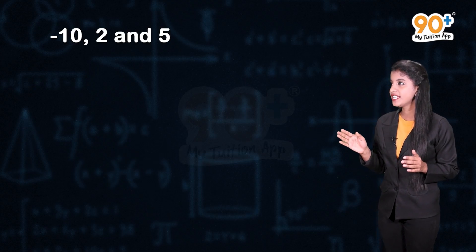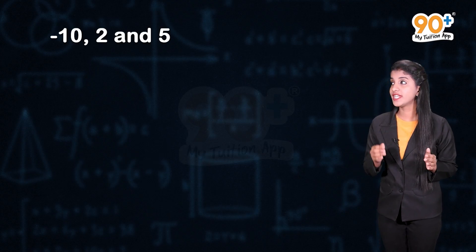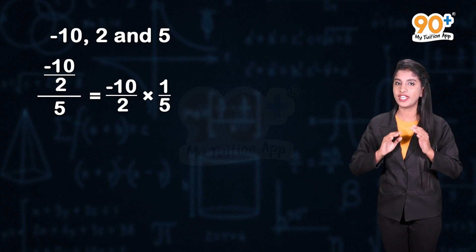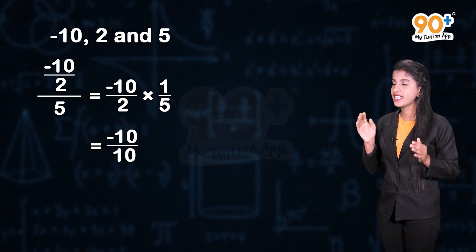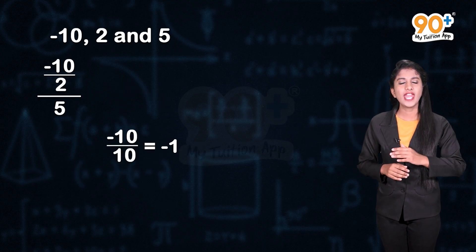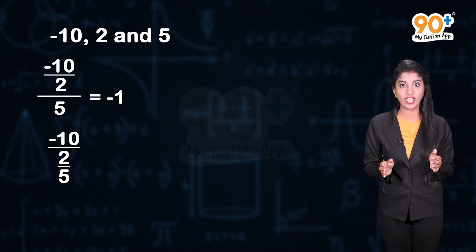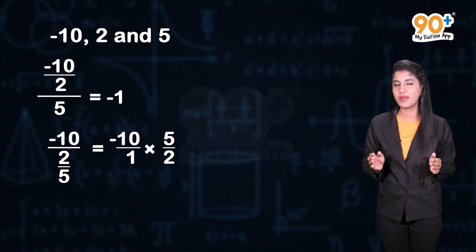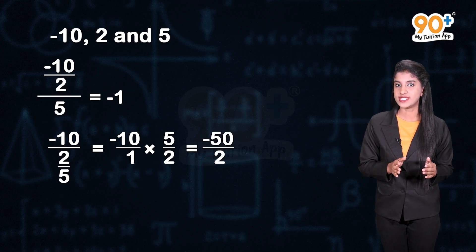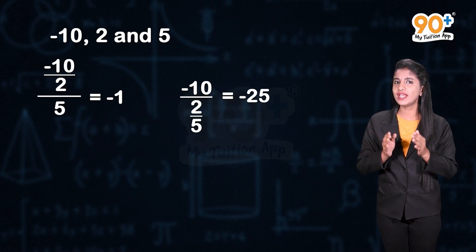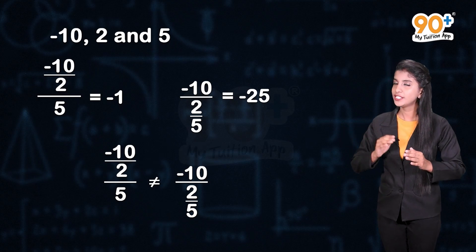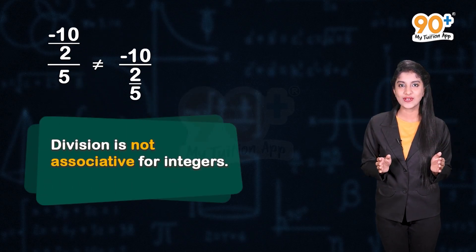Now let us check this for division. Consider 3 integers -10, 2 and 5. What is (-10 ÷ 2) ÷ 5? That is equal to -10/2 × 1/5 = -10 ÷ 10 = -1. Now, what is -10 ÷ (2 ÷ 5)? That is equal to -10 × 5/2 = -50 ÷ 2 = -25. So we can clearly observe that (-10 ÷ 2) ÷ 5 is not equal to -10 ÷ (2 ÷ 5). So we can say that division is not associative for integers.